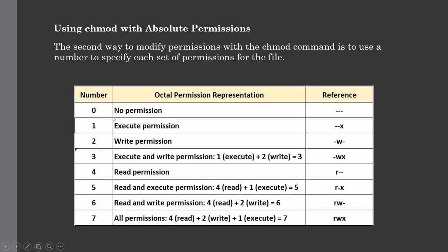In the table: 0 means no permission, 1 is execute only, 2 is write only, 3 is write and execute, 4 is read only, 5 is read and execute, 6 is read and write, and 7 gives all permissions — read, write, and execute. To use this absolute permission method you need to remember this table clearly.